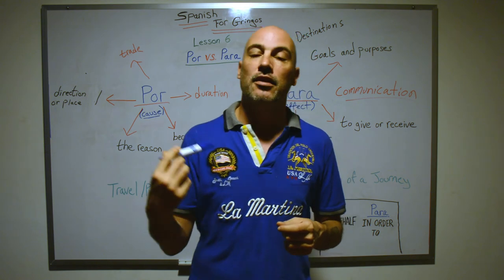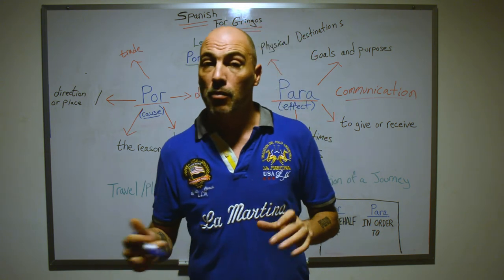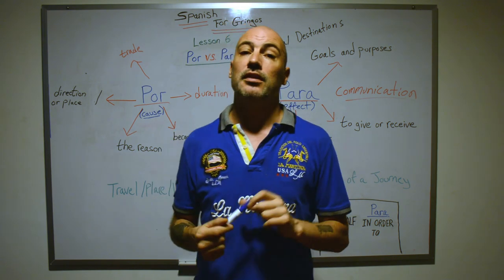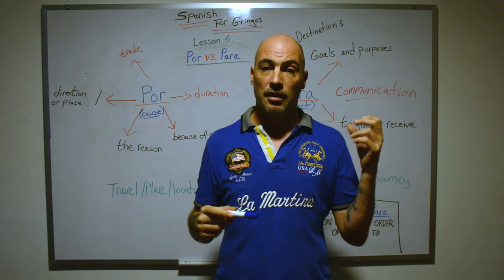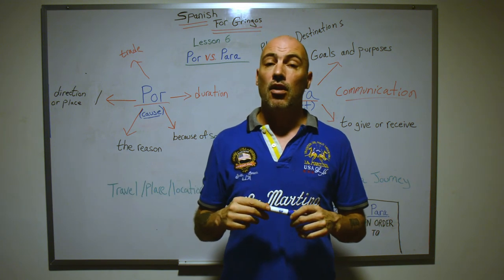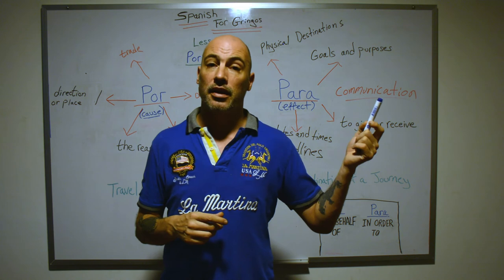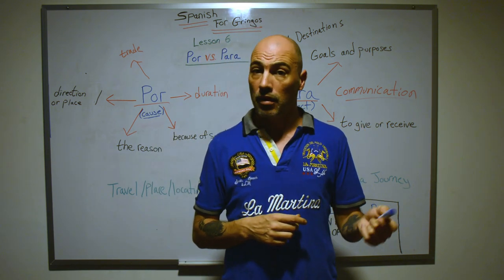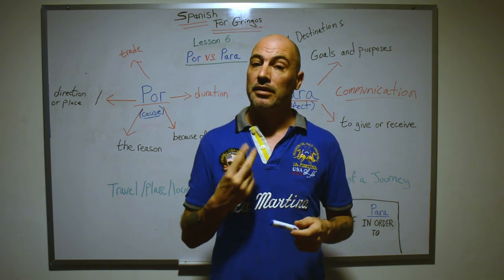I'll come back in another ten or twenty videos and touch on por and para with more complicated examples. Hopefully by then you'll have a better understanding of when these two are being used. Just remember the two key points: cause and effect, reason and destination. Think of por and para as placeholders used in lieu of words like 'of,' 'to,' or 'of' — they don't always mean 'for.' Until the next lesson, peace.